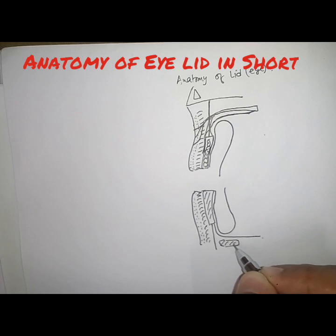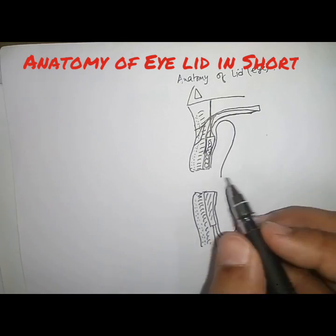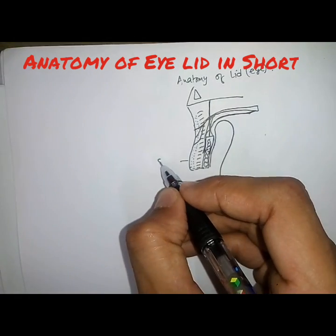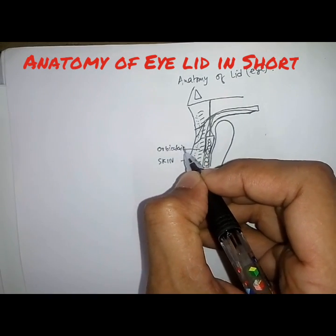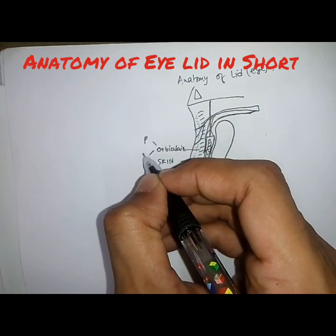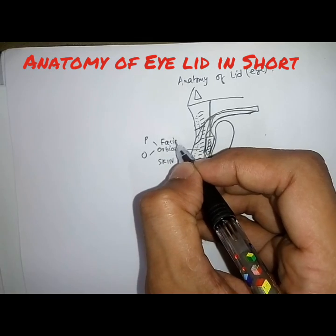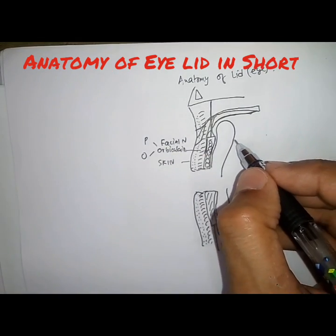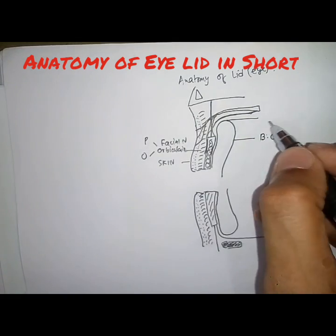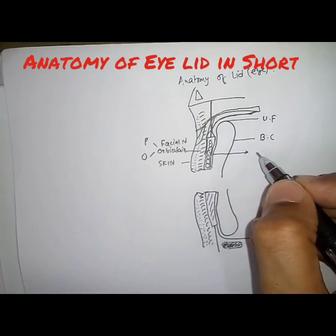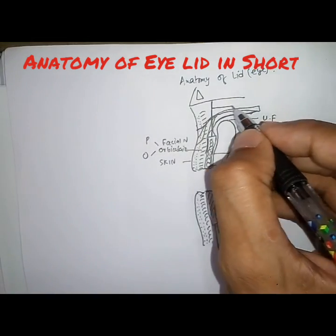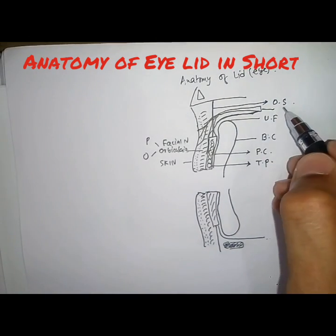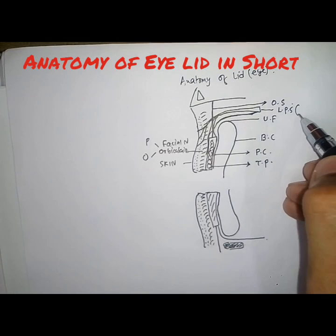The key structures to mark are: the skin, the orbicularis muscle — which has two parts, the palpebral part and the orbital part, supplied by the facial nerve — the bulbar conjunctiva, the upper fornix, the palpebral conjunctiva, the fibrous tarsal plate, the orbital septum, and the levator palpebrae superioris, supplied by the oculomotor nerve.